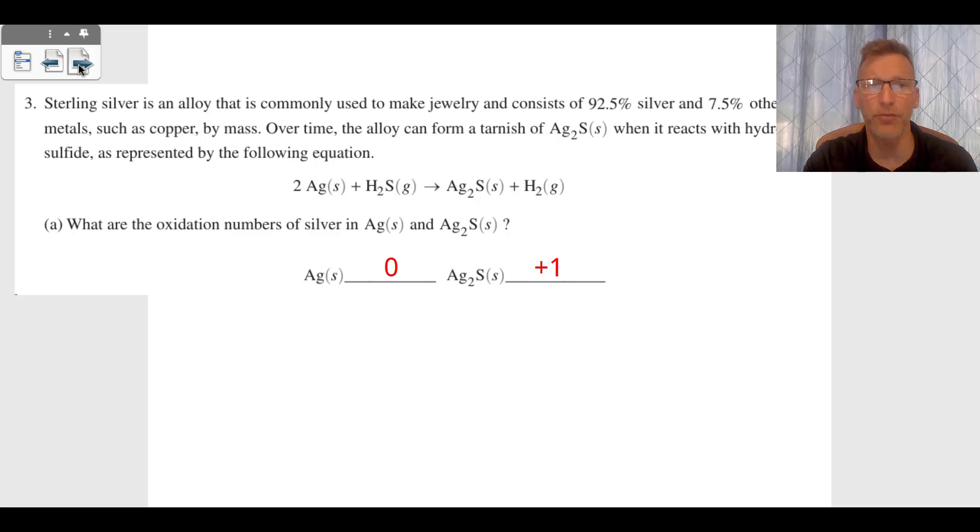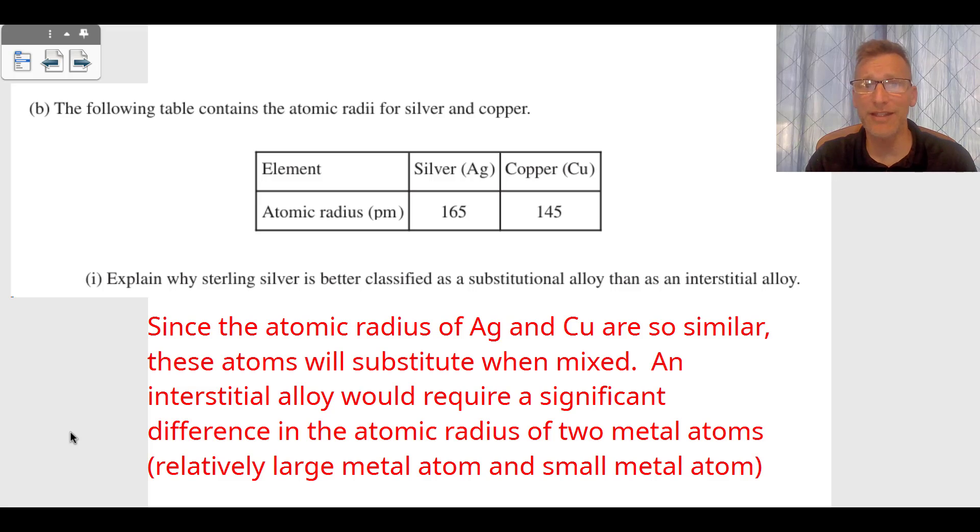Question B looks at the difference between silver and copper and their atomic radiuses. They're about the same, they're a little bit different. But the question asks, explain why sterling silver is better classified as a substitutional alloy than an interstitial alloy. Since the atomic radius of silver and copper are so similar, these atoms will substitute when mixed. An interstitial alloy would require a significant difference in the atomic radius between the two metal atoms or the two atoms: one relatively large metal atom, one smaller, either a non-metal or metal atom. But an interstitial would have a very distinct difference.